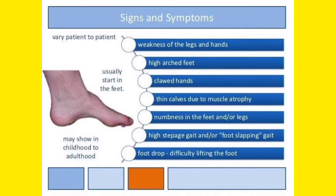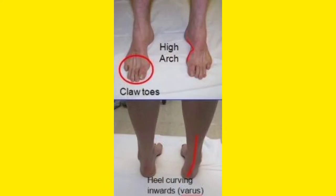All these signs and symptoms occur because of peripheral nerve damage. You can see the high arching of the foot — high arch foot — and clawing of the toes, where the toes have become claw-like. You can also find heel carving in the inward direction, which is generally known as varus.